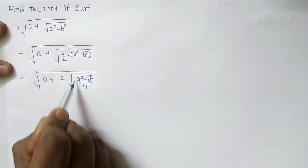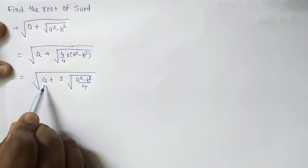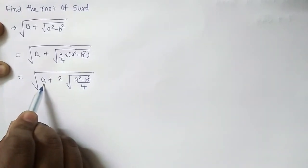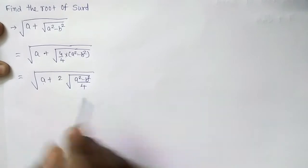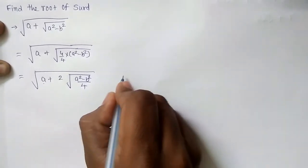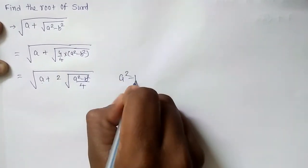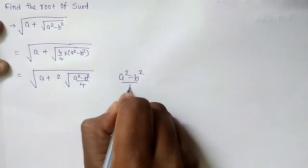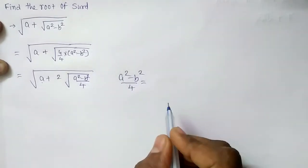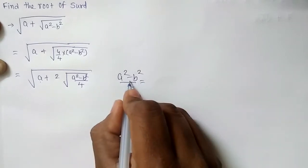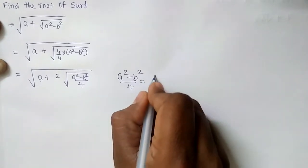As we got 2, now we have to factorize this in such a way that addition would be a and multiplication would be this one. a square minus b square upon 4 has to factorize. I will factorize in a different way. a square minus b square would be having two factors.